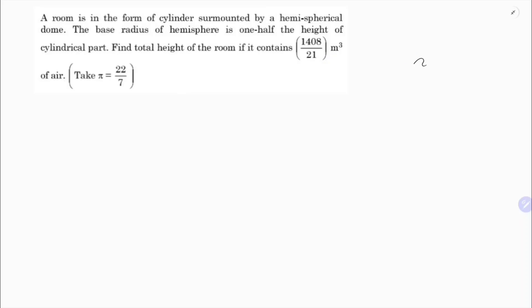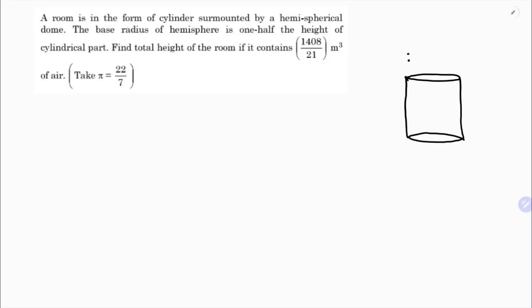The volume is given. Here the cylinder is surmounted by a hemispherical dome — this is the dome and this is the cylindrical portion. They told the base radius is one half of the height of the cylindrical portion.